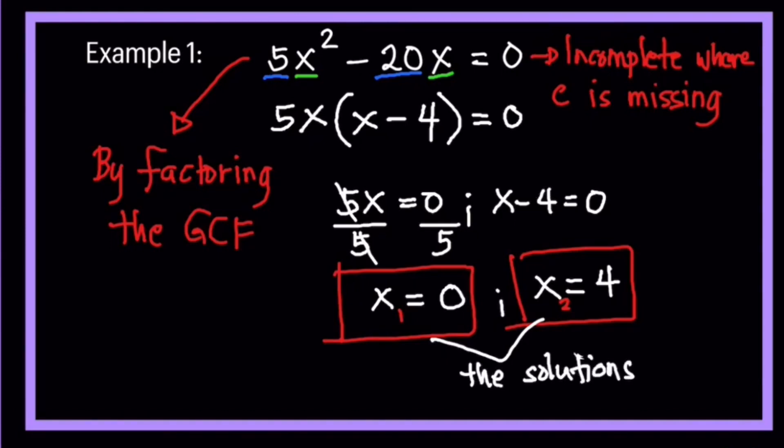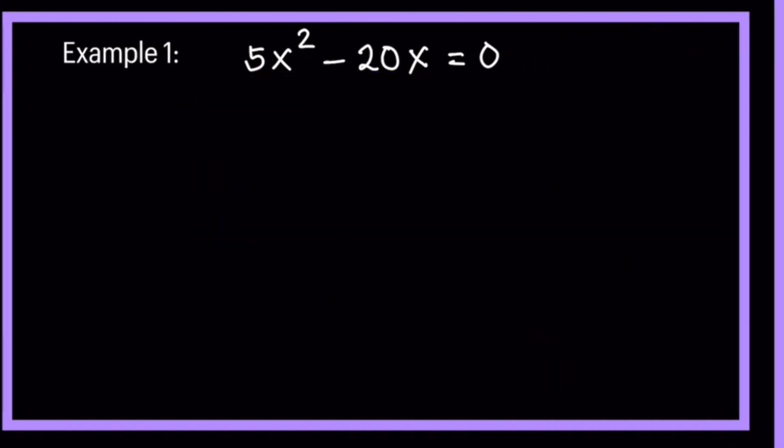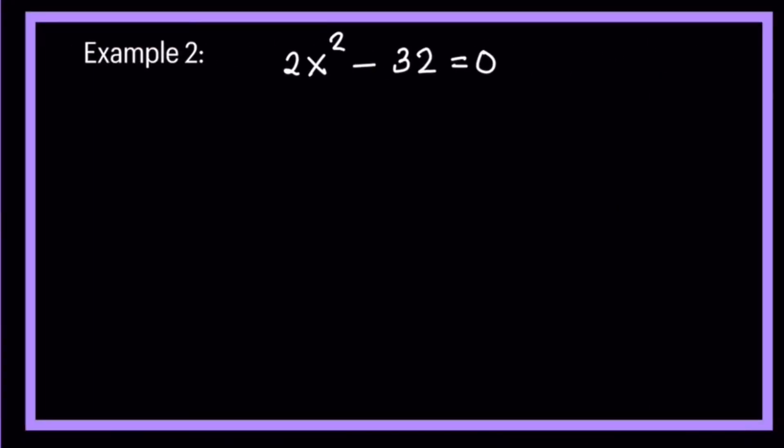Let's have another example. Example number 2. We have here 2x squared minus 32 is equal to 0. This equation is still incomplete. Why do you think it's incomplete? Because what is missing here? It's incomplete because b is missing, the term b here is missing. So how do we solve this equation?